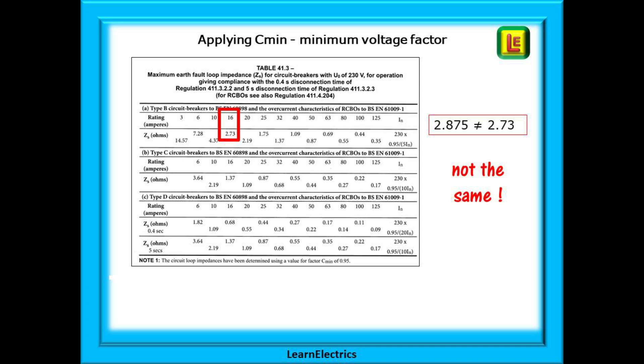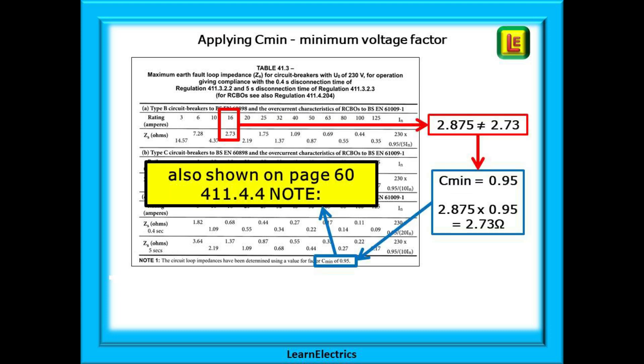Compare this to table 41.3 on page 62. Find the tab section. Find 16 amps and the answer shown does not match our calculation. 2.875 is not equal to 2.73. We need to do another calculation to get the right answer.